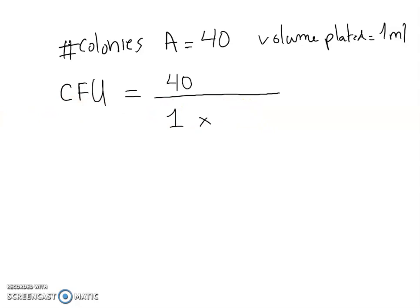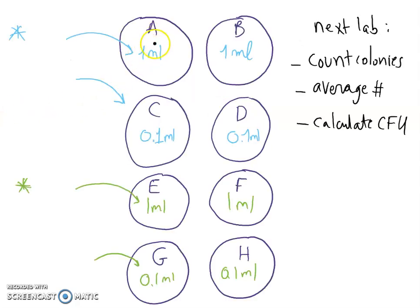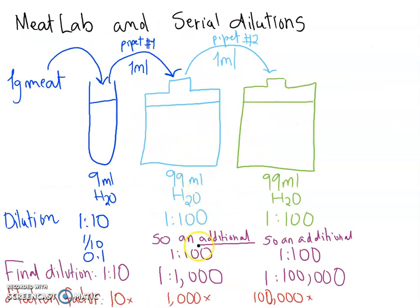So if we go back, that's the volume that we plated on plate A, and the dilution comes from that blue bottle right here. The final dilution was one thousand.